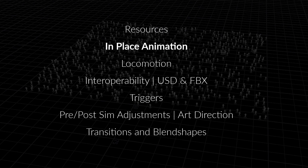Section two is in-place animation — the simplest type of crowd simulation. I'm not going to spend a lot of time on this because it's a simple and primitive way of doing crowd sims. I'm going to be spending most of my time on the next section, which is locomotion — a different way of doing crowd sims.